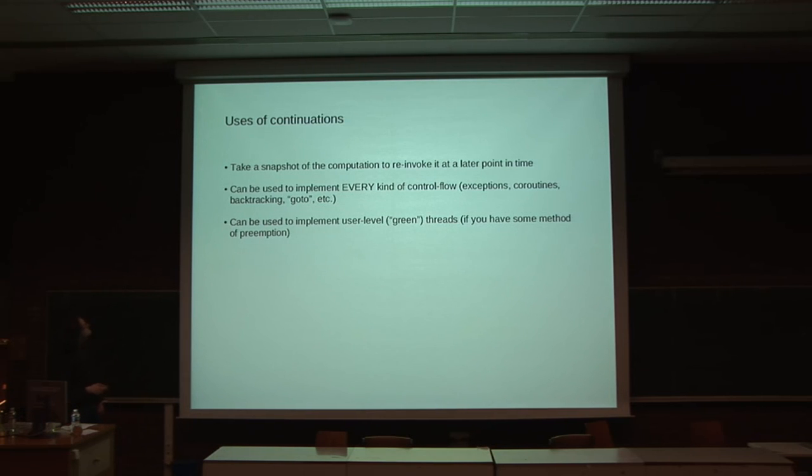How can you use these continuations? You take a snapshot of the current state, and by re-entering this state, you can implement every sort of control flow, like exceptions, where you just jump down the stack, like coroutines, where different continuations invoke each other, and backtracking, which retries an alternative branch and a set of possible options, or things like go-to, which are just jumps.